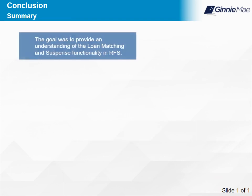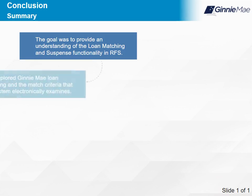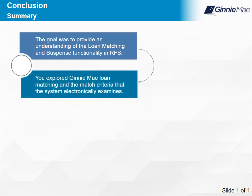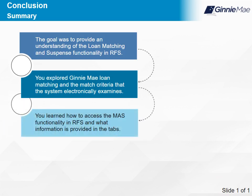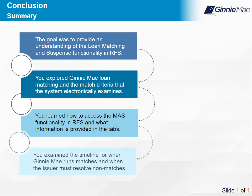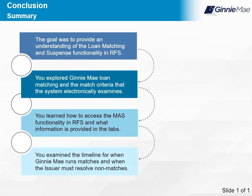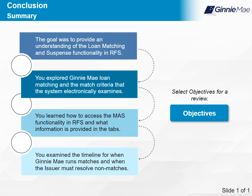The goal of this training module was to provide you with a fundamental understanding of the loan matching and suspense functionality in the Reporting and Feedback application. You explored what Ginnie Mae loan matching is and the match criteria the system electronically examines to determine if the issuer-reported loan data matches the agency data. You learned how to access the MAS functionality in RFS and what information is provided in the MAS tabs. Finally, you examined the timeline for when Ginnie Mae runs matches and when the issuer must resolve non-matches. Select Objectives for a review of what you should now be able to do. This concludes the training.